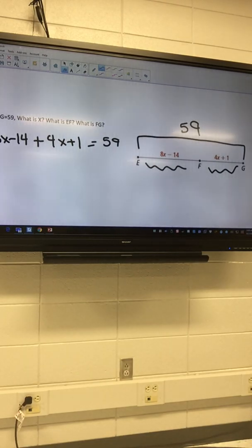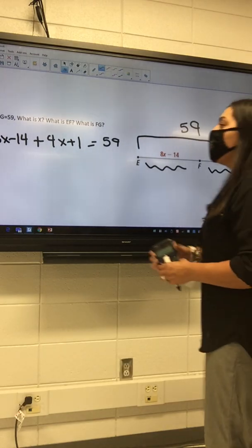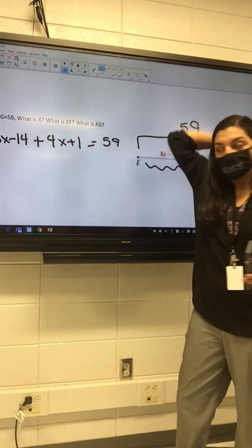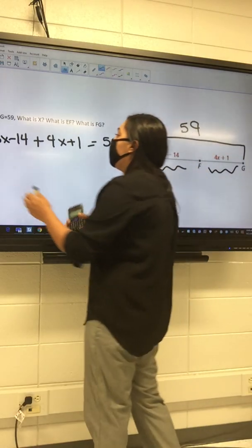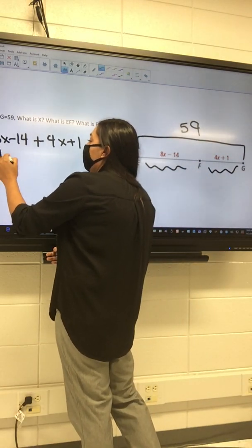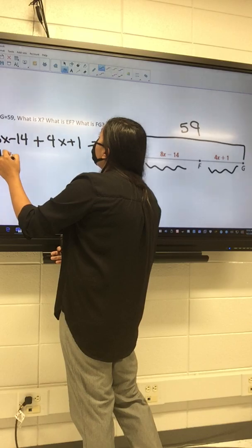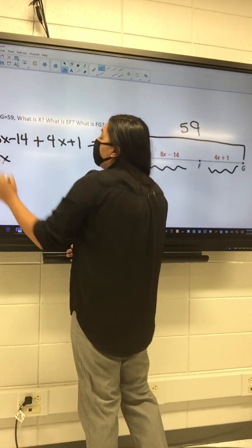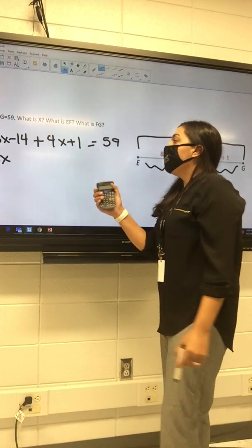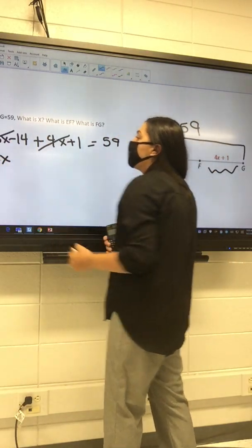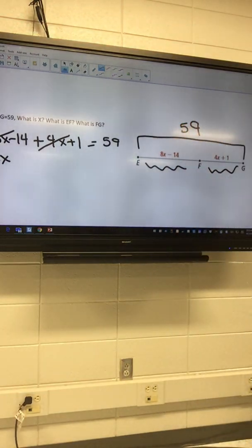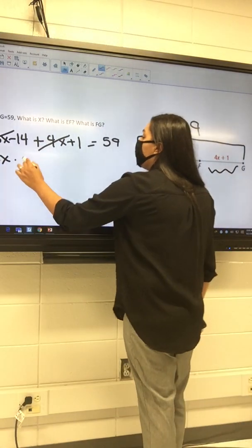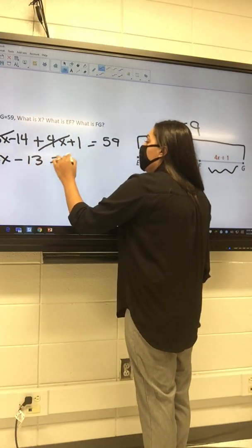Okay, so on the one side we can combine our like terms. What can we combine on this side? 4x and an 8x to give me 12x. And then I still got a negative 14 and a positive 1, and that equals negative 13. So 12x minus 13 equals 59.